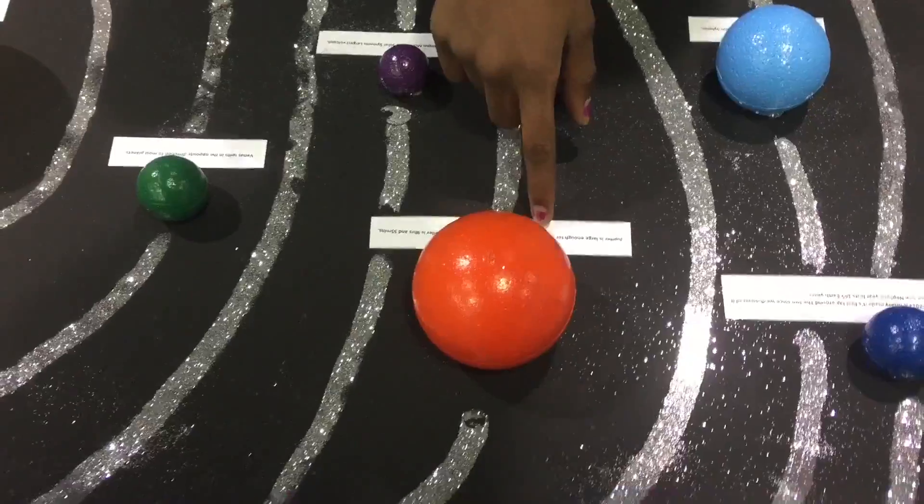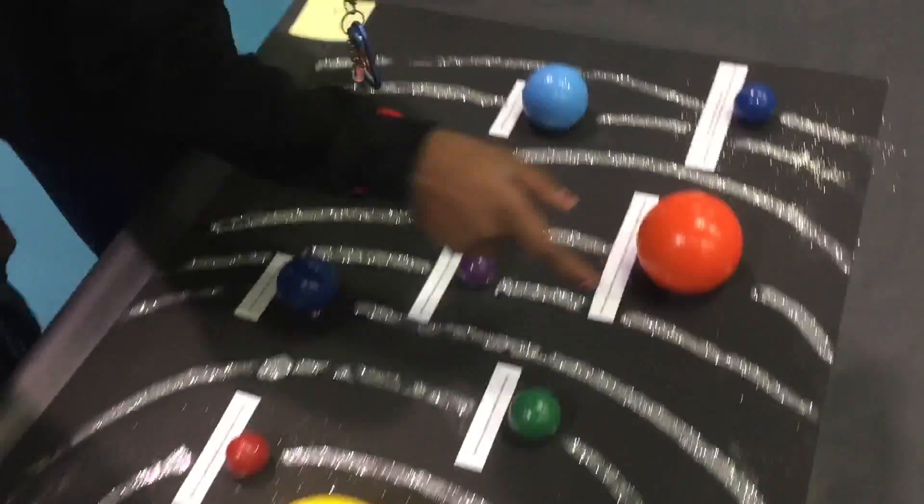Jupiter is large enough for the Earth to fit inside 1,000 times. Jupiter's day is 9 hours and 55 minutes.